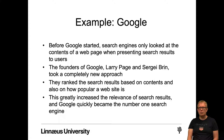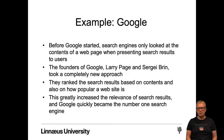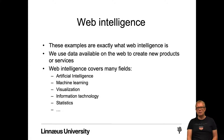Another example is Google. Before Google started, search engines only looked at the contents of a web page when presenting search results to users. The founders of Google, Larry Page and Sergey Brin, took a completely new approach. They ranked search results based on contents, but also on how popular a website is. This greatly increased the relevance of search results and Google quickly became the number one search engine, and most search engines today use this approach or similar approaches.